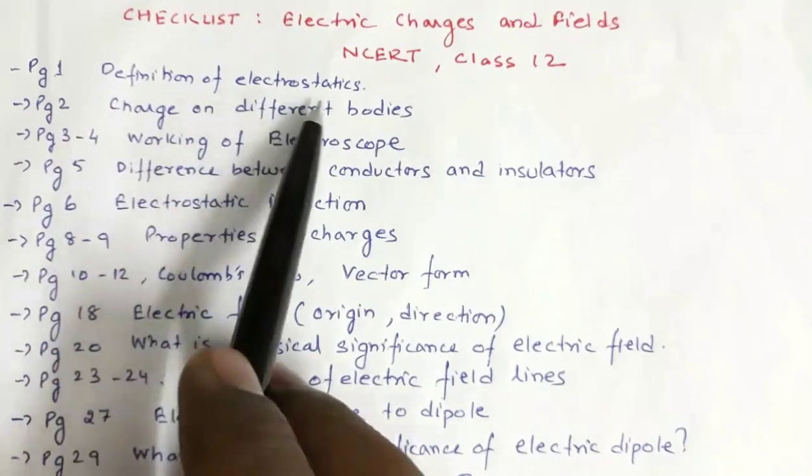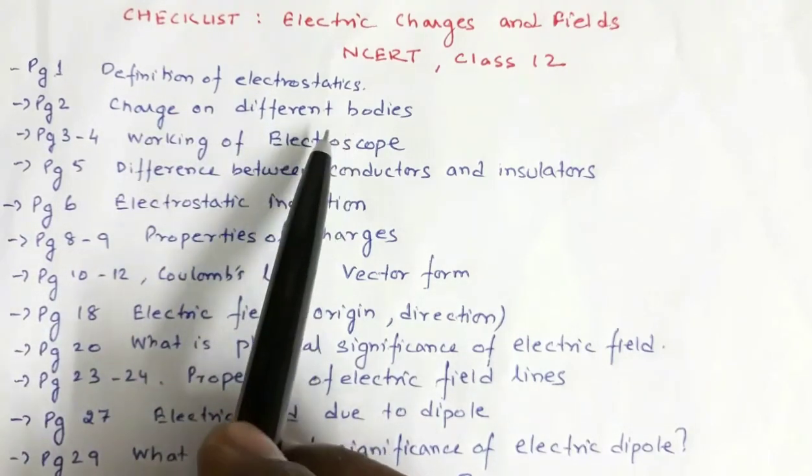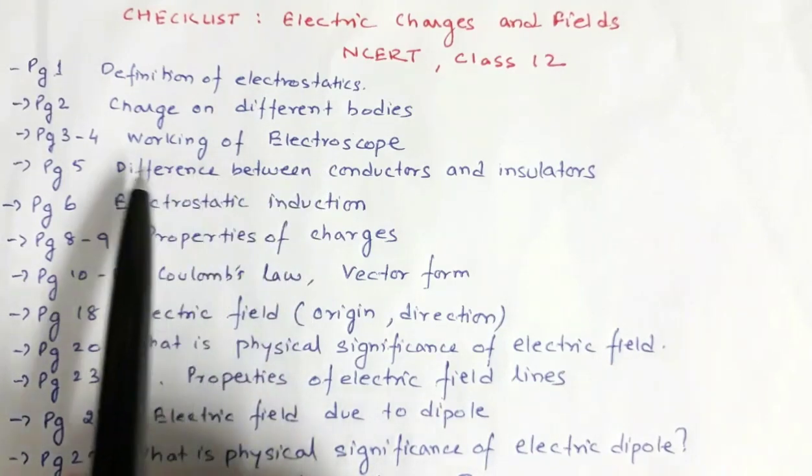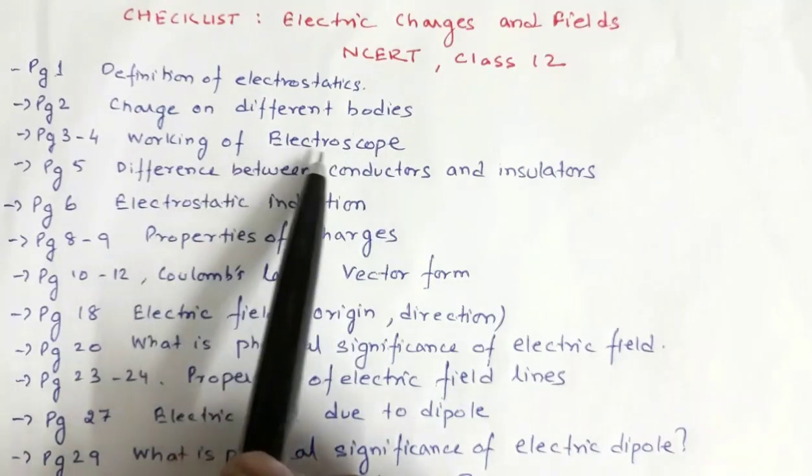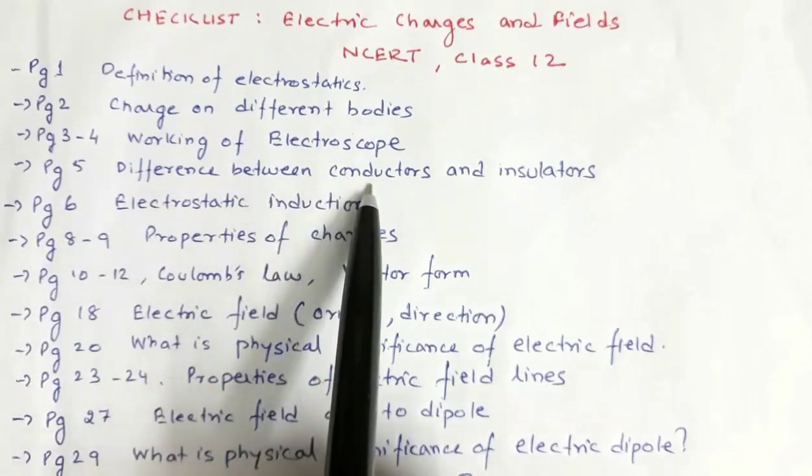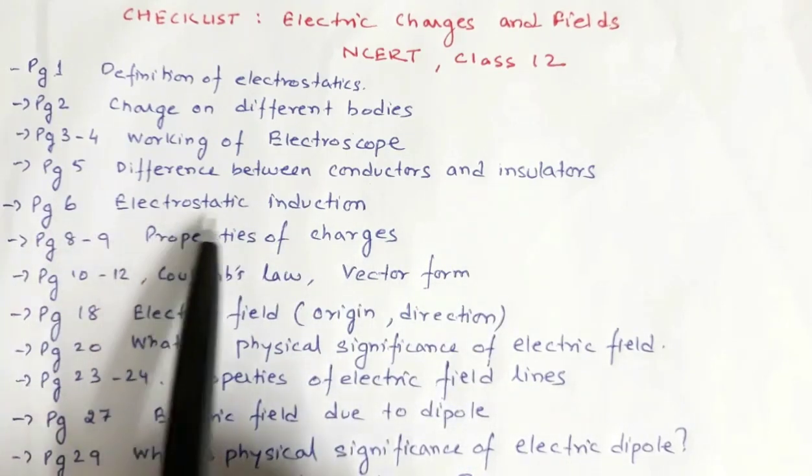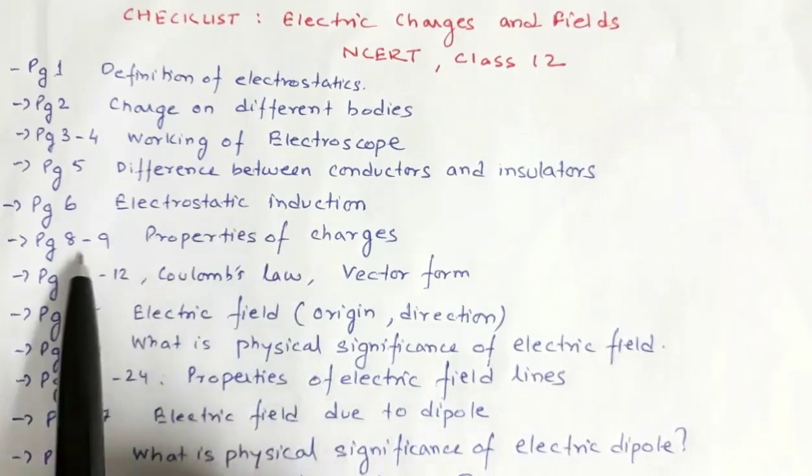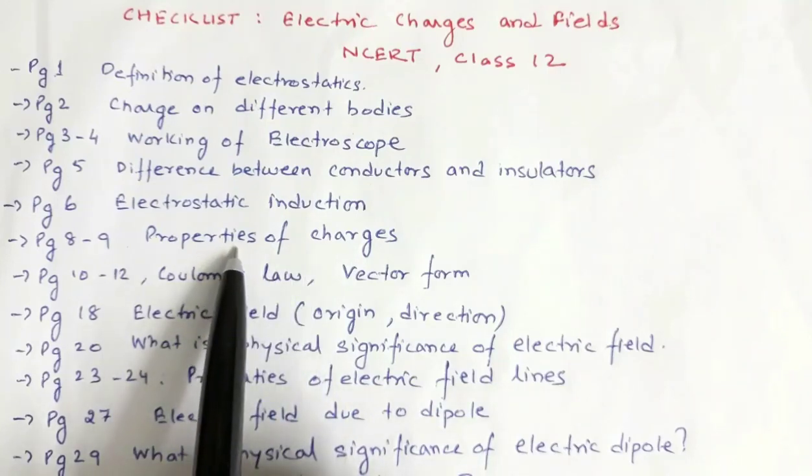The first page is the definition of electrostatics. Page 2 is charge on different bodies. Page 3 and 4 is the working of electroscope. Page 5 is the difference between conductors and insulators. Page 6 is the definition of electrostatic induction. Page 8 and 9 is the properties of charges.